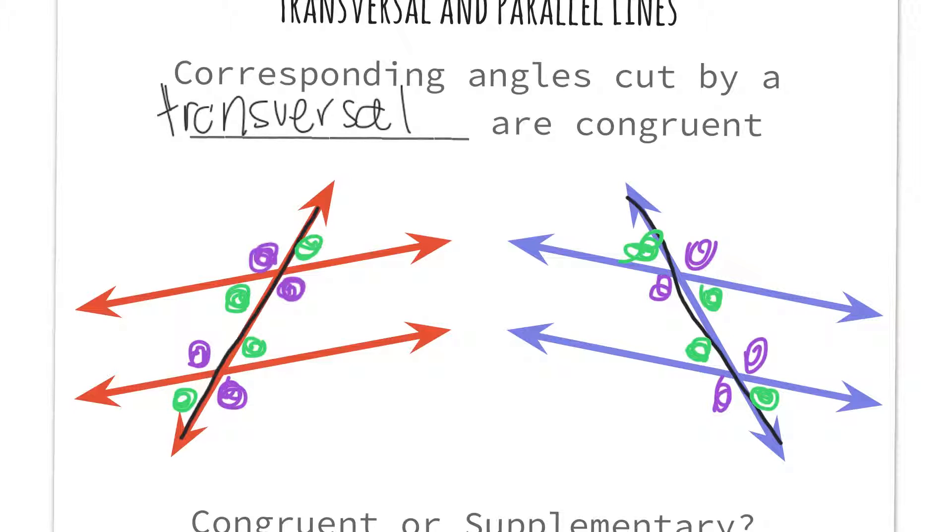So how that helps us: anything that is purple is going to be congruent or equal to anything that is purple. Actually it's true for both. You can say the same thing about green. Anything that's green in this side is congruent to anything in green. That is only true if these two lines are parallel.